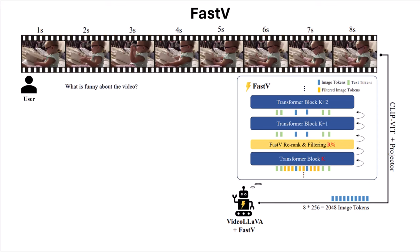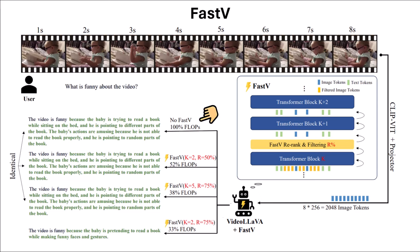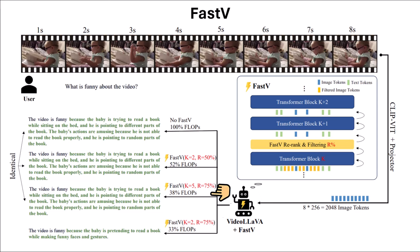The filtering is based on the attention scores alpha — if a token doesn't attend much, it's not very important and can be dropped. For example, selecting layer 2 and filtering 50% of image tokens reduces FLOPs by 52% while the output answer remains exactly the same. Selecting layer 5 and reducing tokens by 75% brings FLOPs down to 38% of the original, still yielding the same answer. However, selecting layer 2 with 75% reduction does affect output quality.